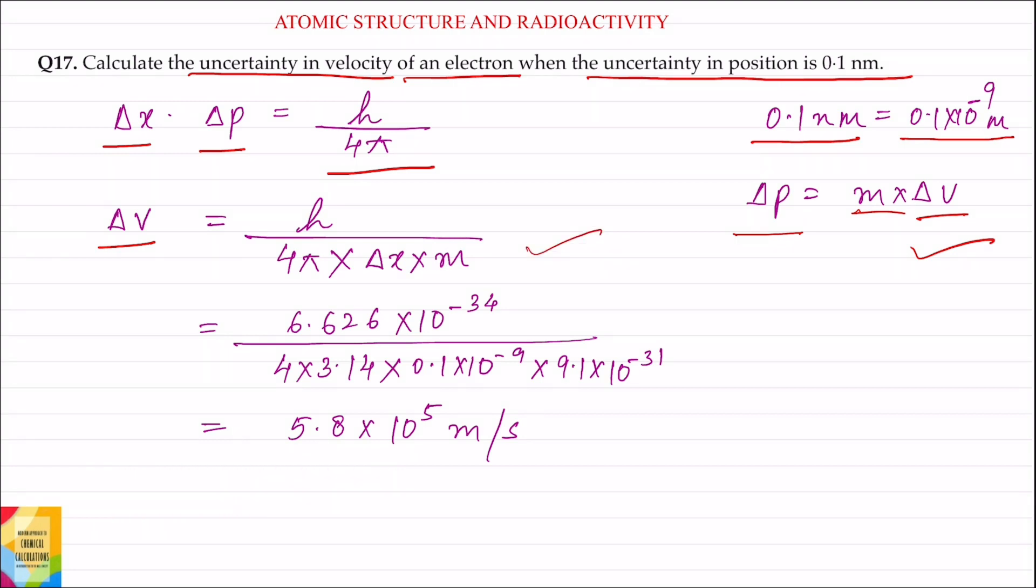Value of h is 6.626 into 10 to the power minus 34. 4 into pi, that is 3.14, into delta x is given as 0.1 nanometer or 0.1 into 10 to the power minus 9 meter.